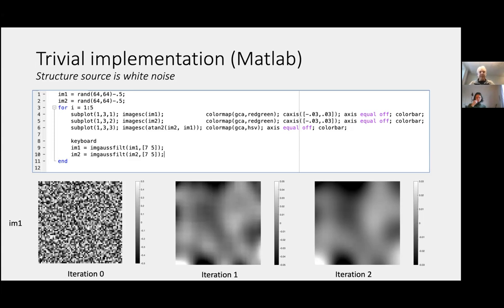There's a keyboard statement in line eight that stops the animation. I'm filtering each image by a Gaussian — just smoothing. If I smooth the image using this loop, at iteration zero I have the original noise case; at iteration one it will be a smooth 64 by 64 image with some edge effects since there are no circular boundary conditions. From a random field you actually recover, at iteration two, some white and black dots — some positive and some negative structure from noise.